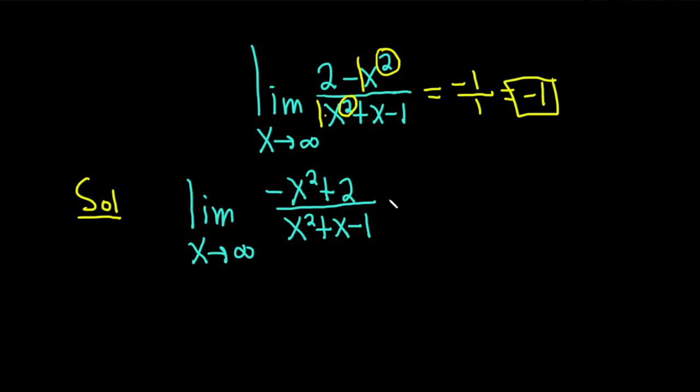And so now what you can do is basically multiply by 1 in a clever way. We're going to multiply by 1 over x squared over 1 over x squared. And now we can take this 1 over x squared and distribute it.